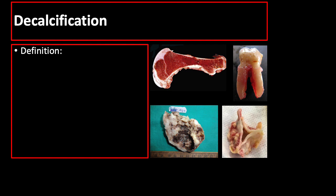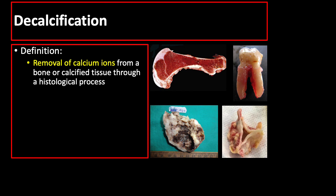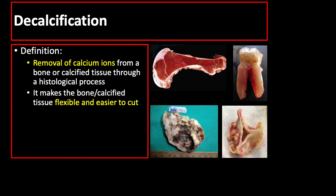So what is decalcification? Decalcification is the removal of calcium ions from a bone or calcified tissue through a histological process that makes the bone or any calcified tissue flexible and easier to cut. Tissues that require decalcification include primarily the bone and other specimens like teeth, calcified tumors, or calcified heart valves.